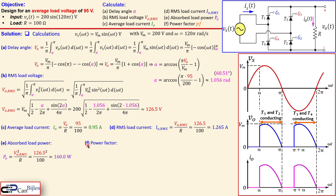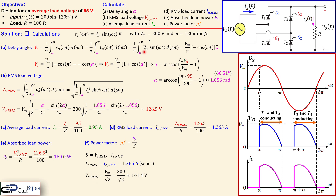The final quantity is the power factor, defined as real power divided by apparent power S. The apparent power equals source voltage RMS times source current RMS. Since the load is in series, the RMS source current equals the RMS load current of 1.265 amps. The RMS source voltage is 200 divided by root 2, giving 141.4 volts. The apparent power is therefore 178.9 volt-amperes, and the power factor is 0.894.